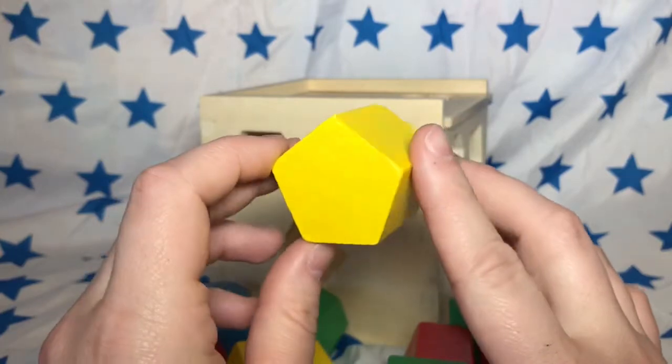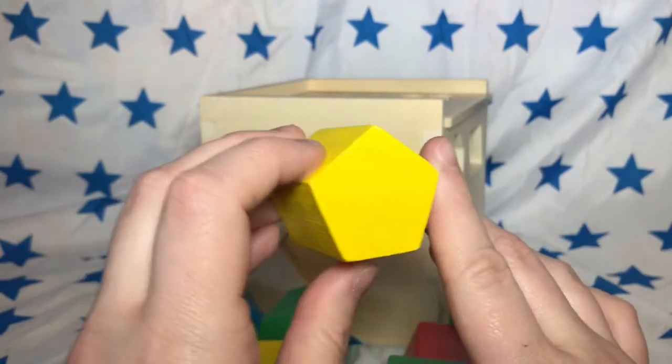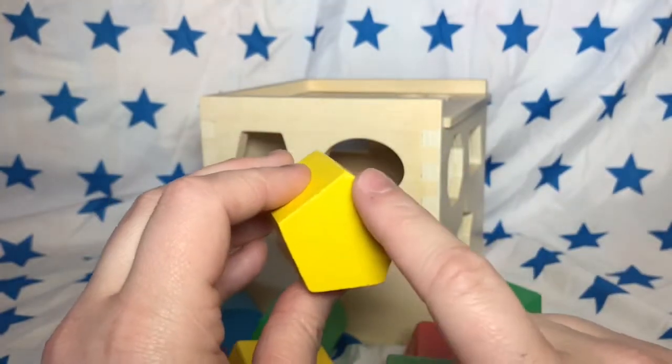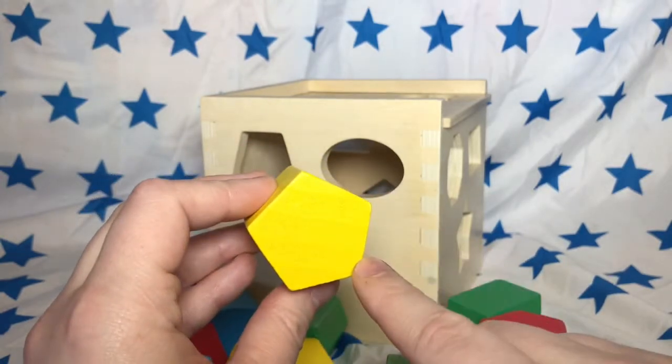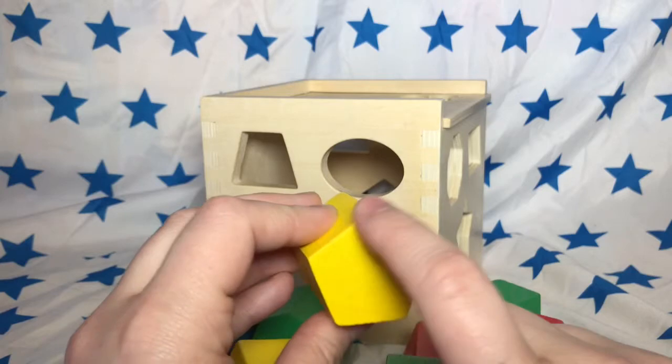This is a yellow pentagon. Pentagons have five sides. One, two, three, four, five.